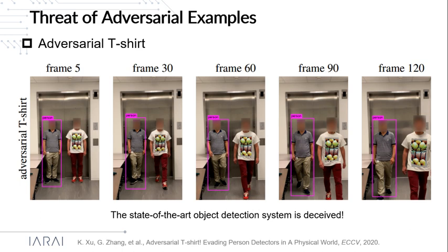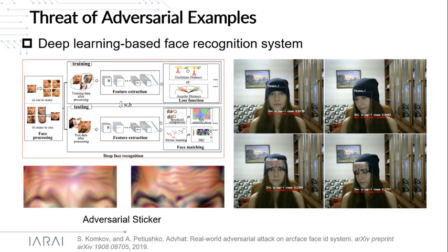Here is one example: the Adversarial T-shirt. This figure shows that with the Adversarial T-shirt, a pedestrian can become invisible from the state-of-the-art object detection system, just like the right person in the frames. Another example is the Adversarial Sticker, which can deceive the face recognition system. The sticker has very weird patterns, and if a person wears this Adversarial Sticker, the face recognition system cannot achieve identification anymore.